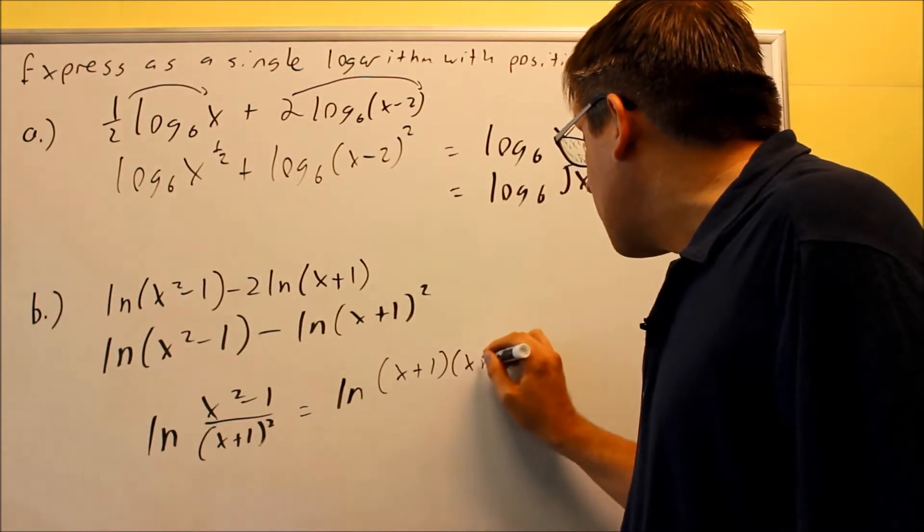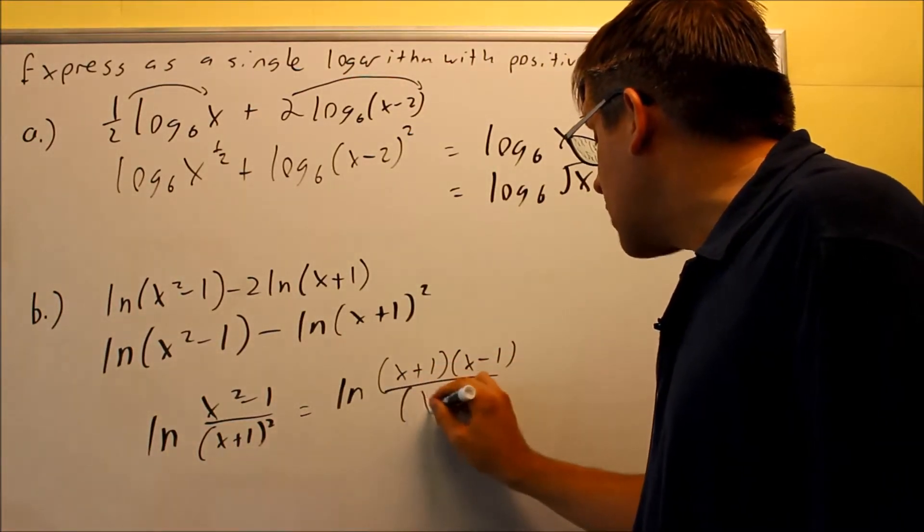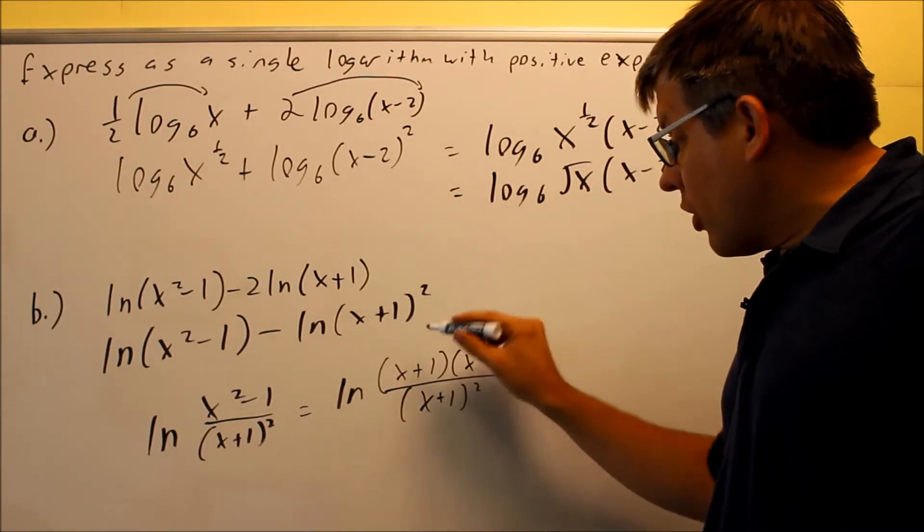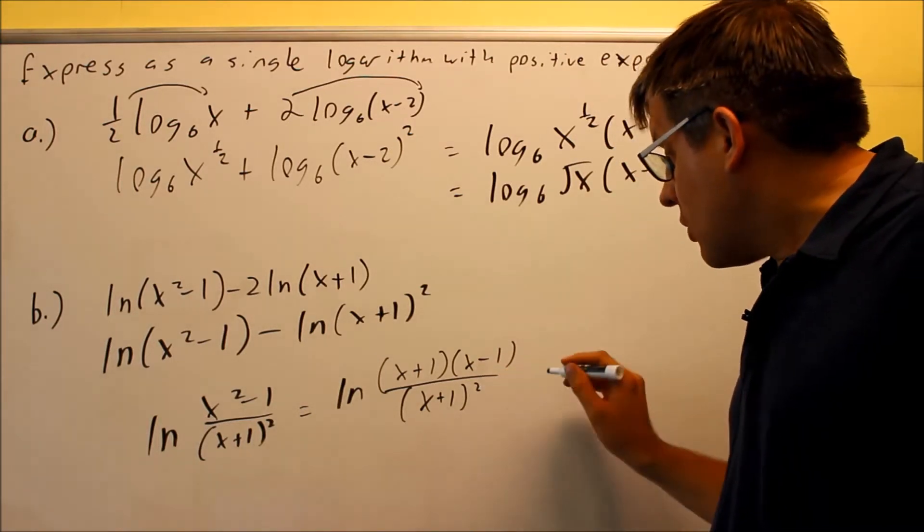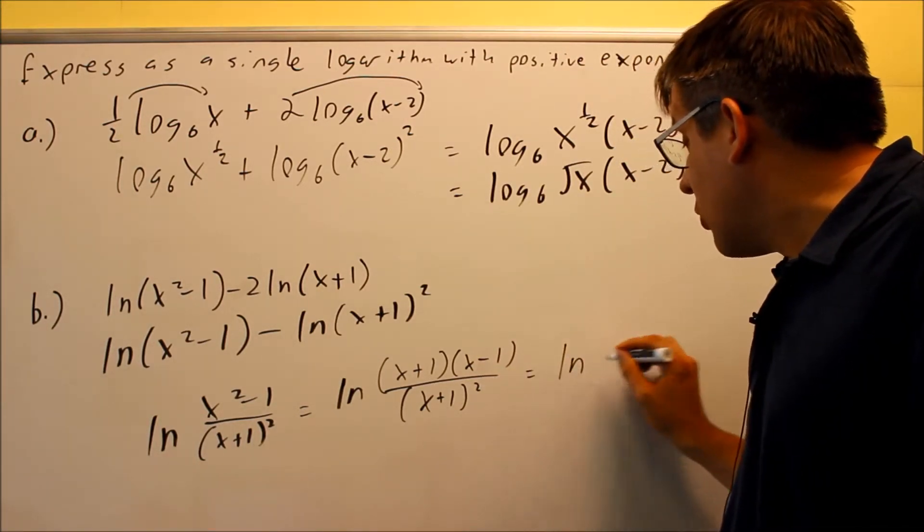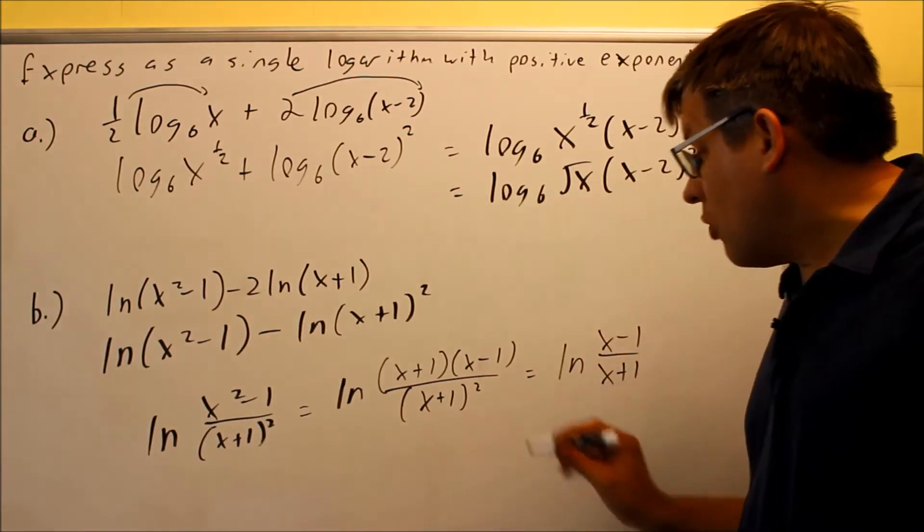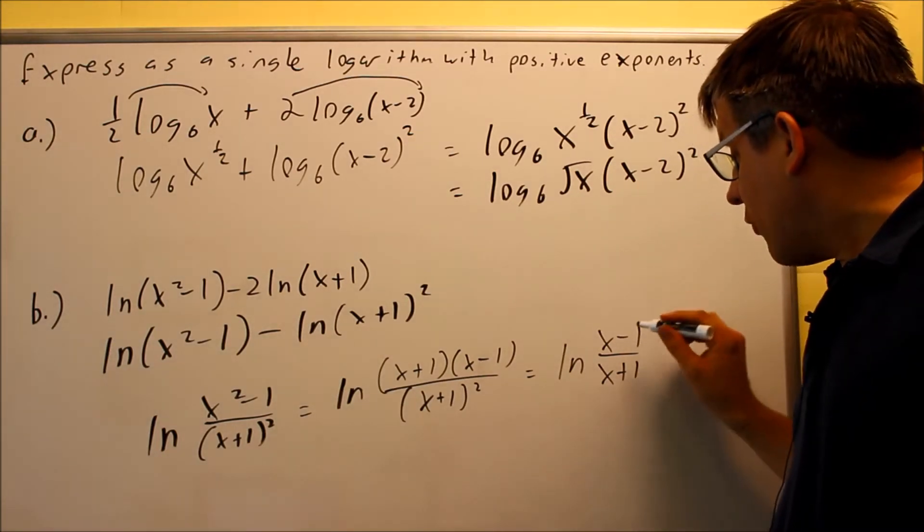This is our difference of squares, x plus 1, x minus 1, we have here, and then down below, x plus 1 squared. We can remove one of these x plus 1's, this is the first power, we have two of them on the bottom. So we are able to make this a little bit simpler, it will turn into x minus 1 over x plus 1. One of the x plus 1's cancel out with the one on top, and then you are just left with this.